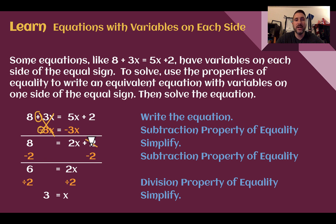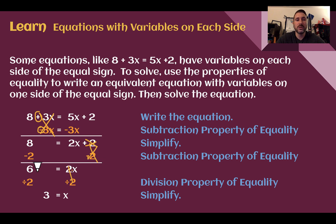I need to get rid of that plus 2 so I can have just the variable on one side, by doing the opposite to both sides. We're going to use the subtraction property to eliminate addition. 8 minus 2 is 6. Now I have 6 equals 2x — there's a hidden multiplication. I divide both sides by 2: 2 divided by 2 is just x, and 6 divided by 2 is 3. So I'm using the same properties as before to rearrange and solve.